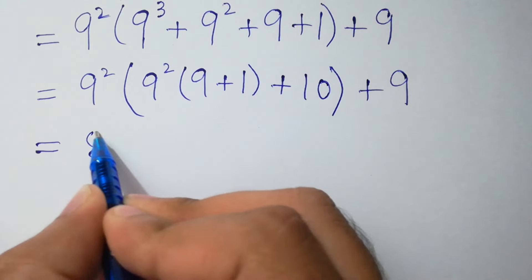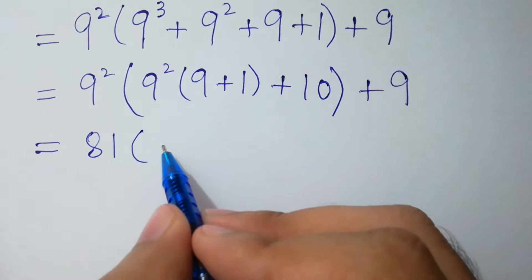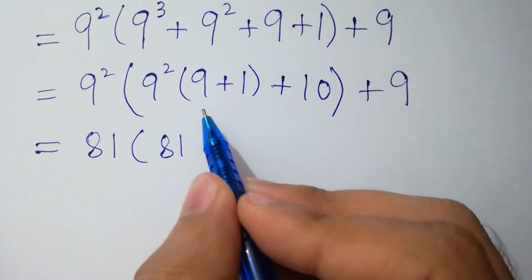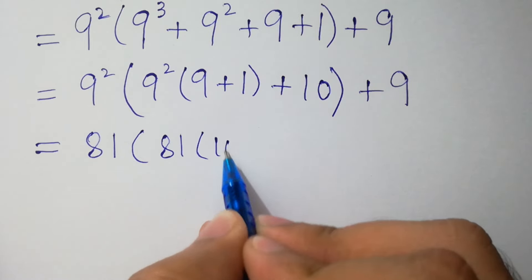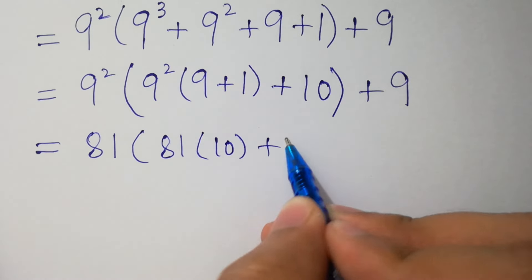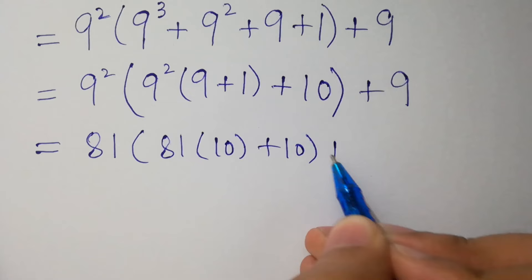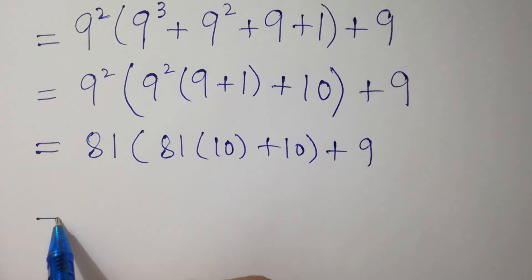Next step, 9 squared is 81. So we have 81 times open bracket, 81 times open bracket 9 plus 1 which is 10, plus 10, close bracket, plus 9.